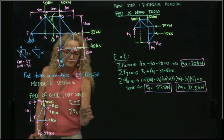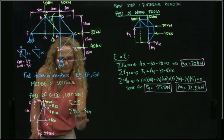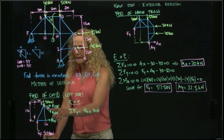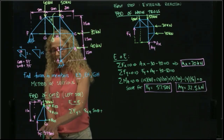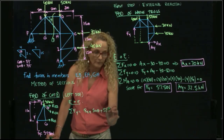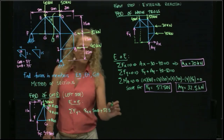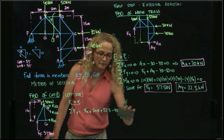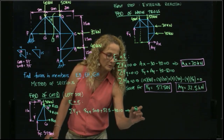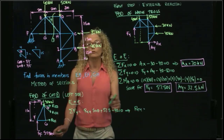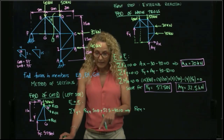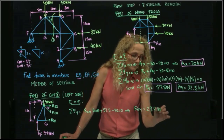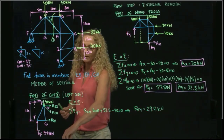For the equations of equilibrium, summing forces in Y includes the EH component: EH times sine of theta, plus Fy of 57.5, minus 40 kilonewtons equals zero. Solving for EH, it is the only unknown, giving a value of 29.2 kilonewtons. Since we get a positive value, the member is in tension.